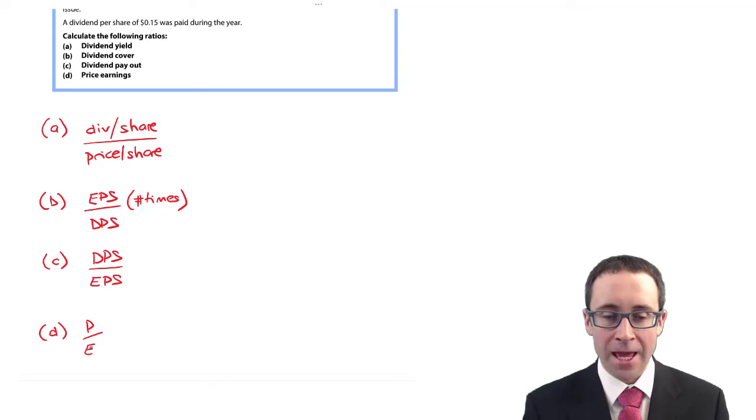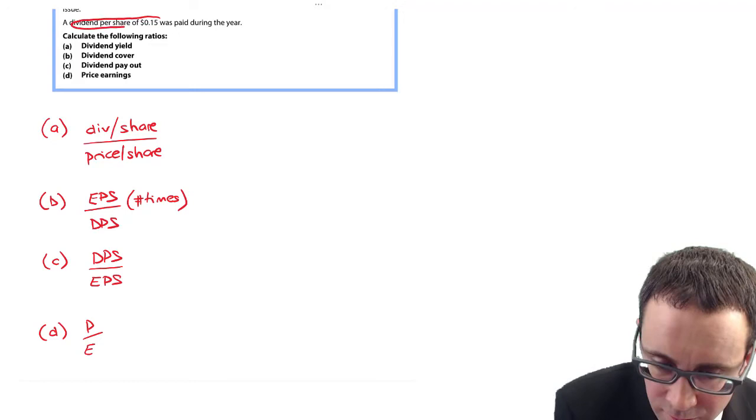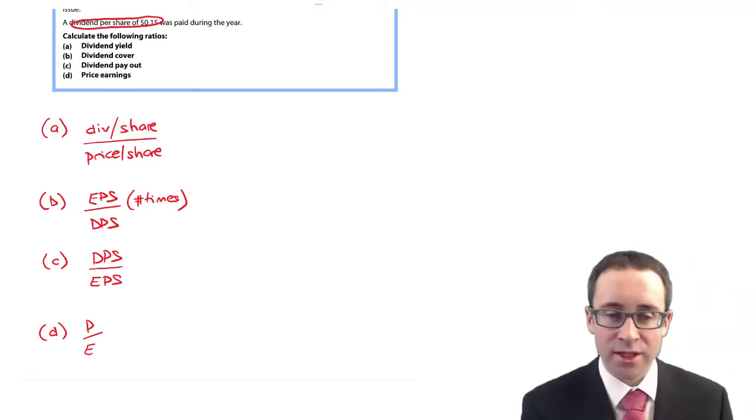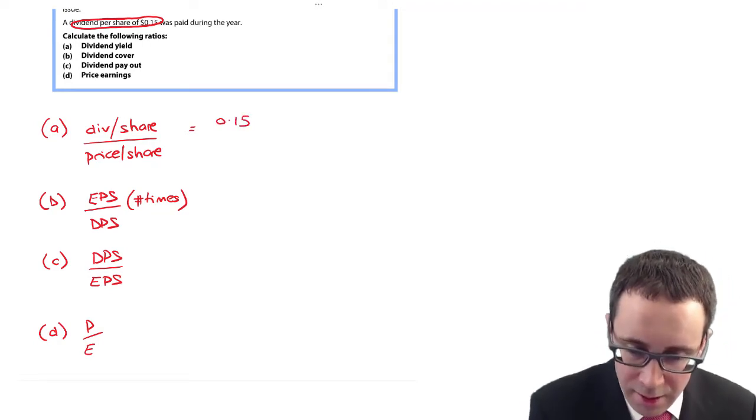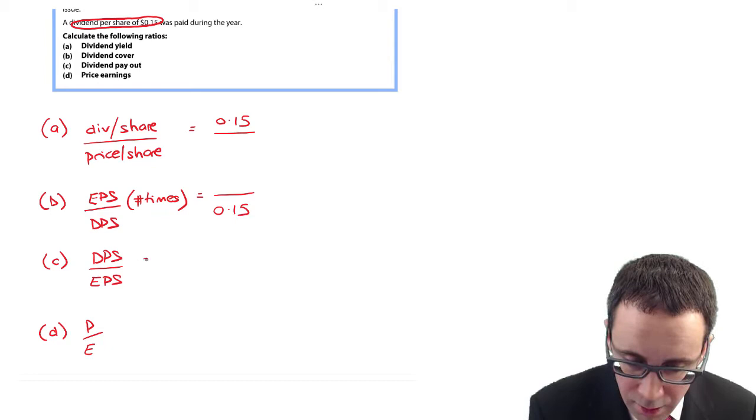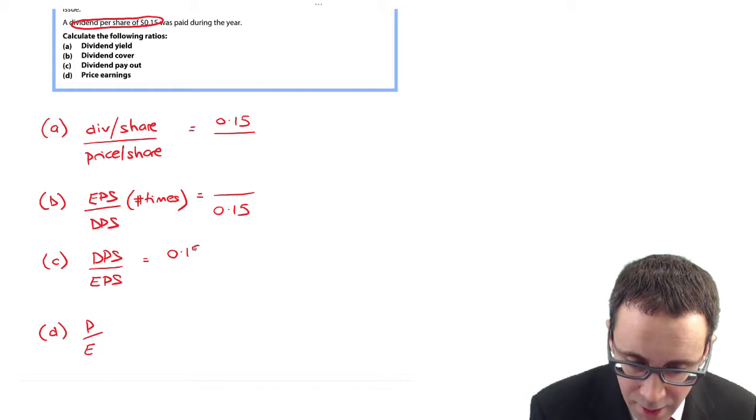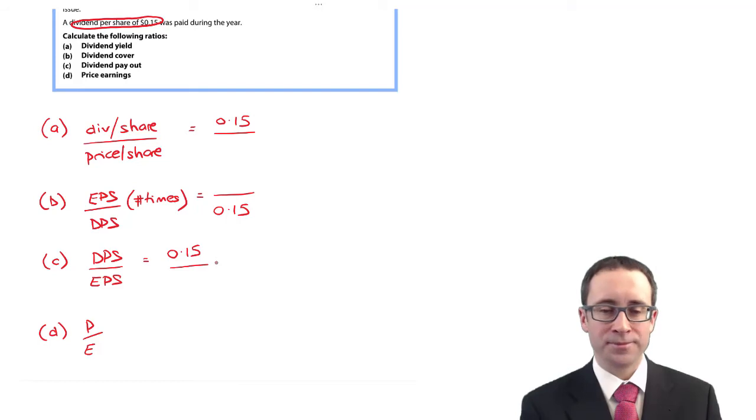Excellent. Well, there's a little good figure at the top there to start off with. Dividend per share is 15 cents. So that's going to be useful in part A, in part B it will also be useful, and it will also be useful there in part C. It's not relevant at all to part D.